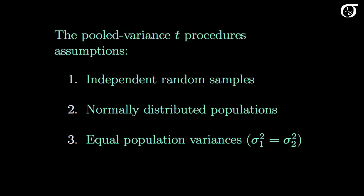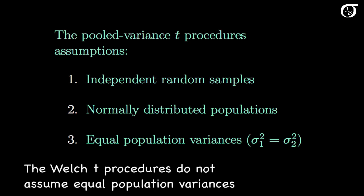The Welch unpooled t procedures also have these first two assumptions, but the Welch procedures do not assume equal population variances.